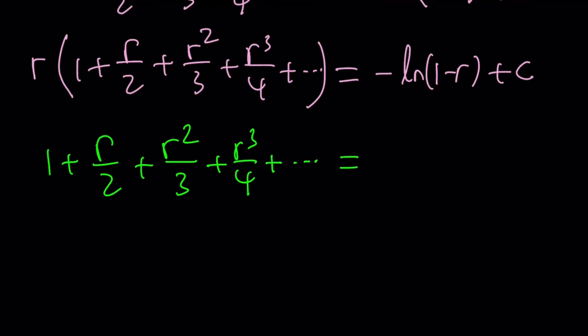So now this is going to go on, and can I switch c and the ln? Because it just bugs me. Now I want to start with a positive term. c minus ln of 1 minus r, divided by r. This looks good.